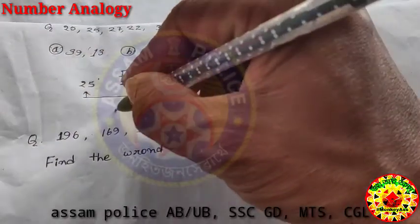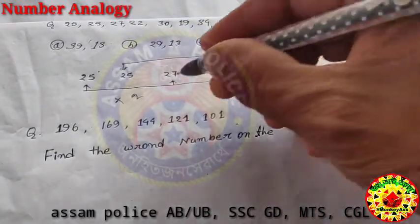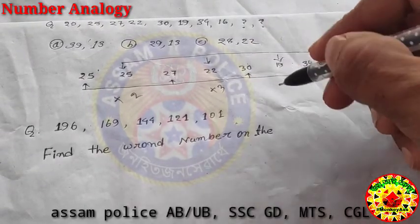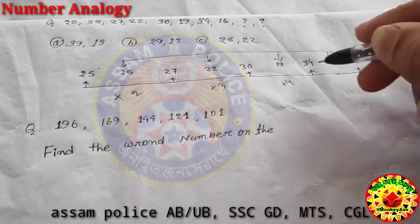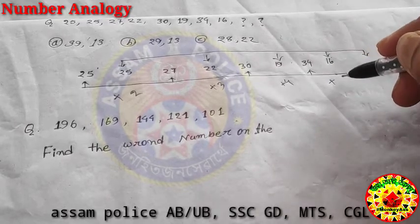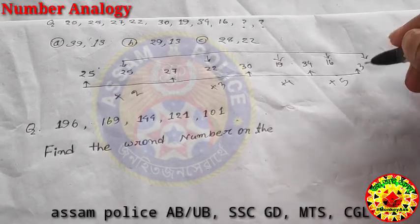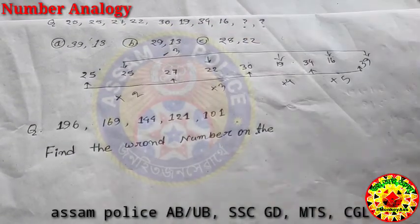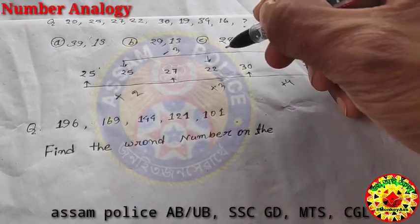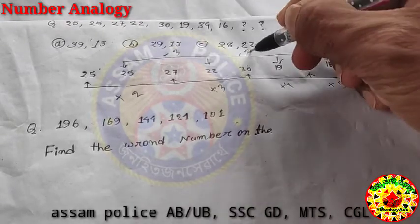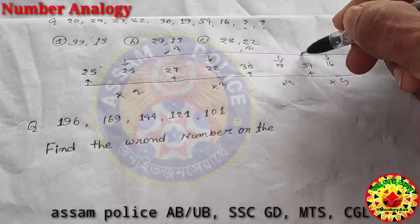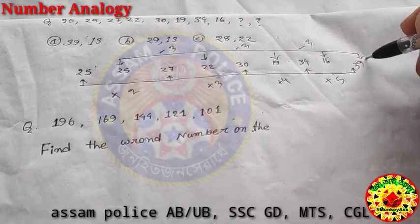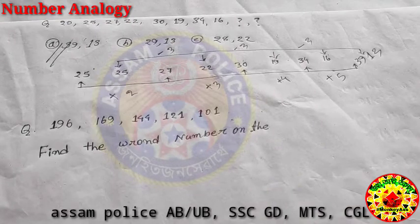In the first series: 25 plus 2 gives 27, 27 plus 3 gives 30, 30 plus 4 gives 34. In the second series: 25 minus 3 gives 22, 22 minus 3 gives 19, 19 minus 3 gives 16. So the pattern in the second series is minus 3 each time. That confirms the number sequence.